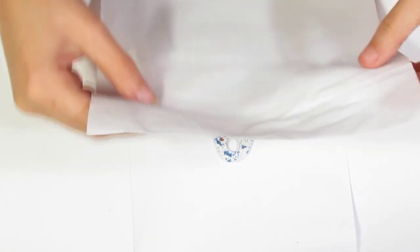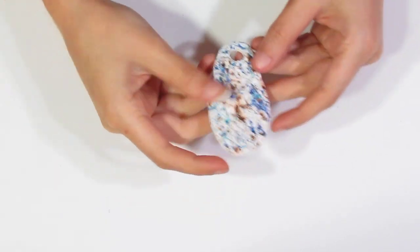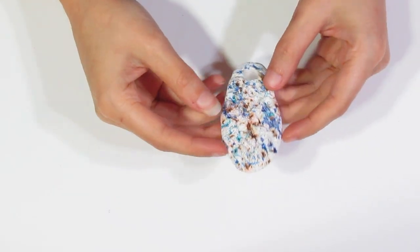And what I'd recommend doing is just popping a tissue over the top. And this will soak up the wax as it melts. And here it is, baked.